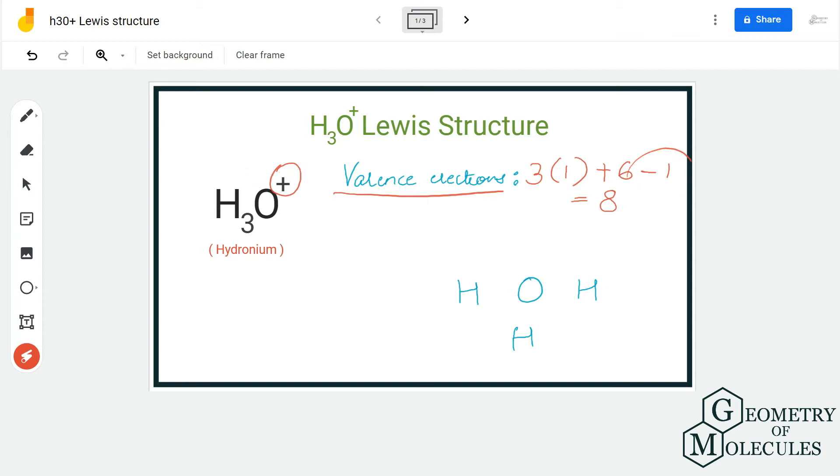So in total now we have eight valence electrons for this ion. The oxygen atom will take the central position because hydrogen atoms always go on the outside. So place the oxygen atom in the center and all the other hydrogen atoms like this.